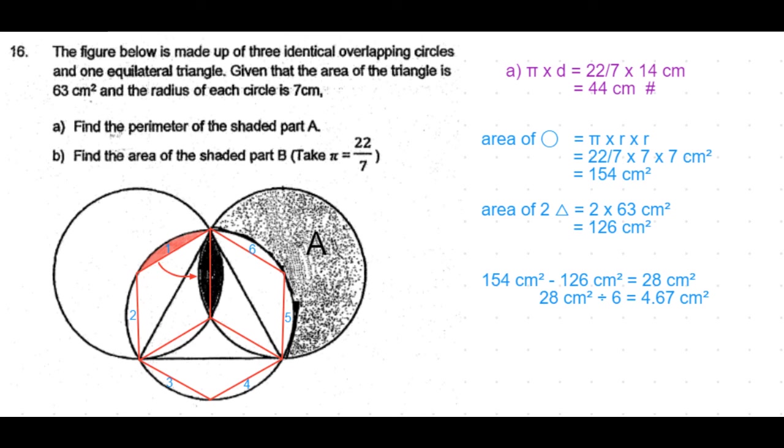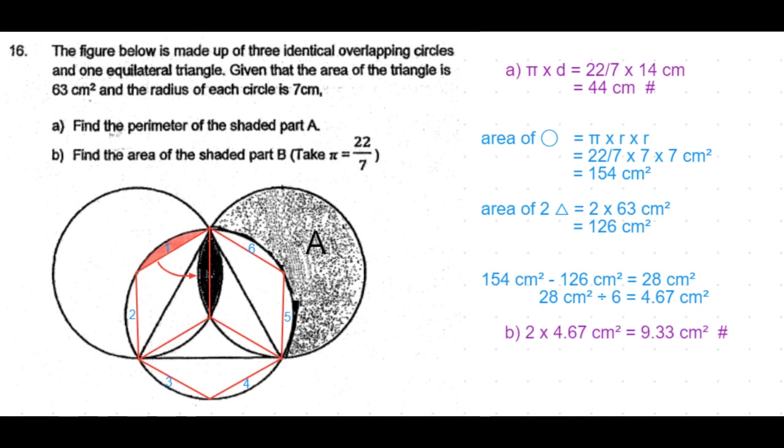In shaded part B we have two such portions. So we multiply that by 2 which is equal to 9.33 cm square or 9 1 by 3 cm square. So that's the answer to part B of the question.